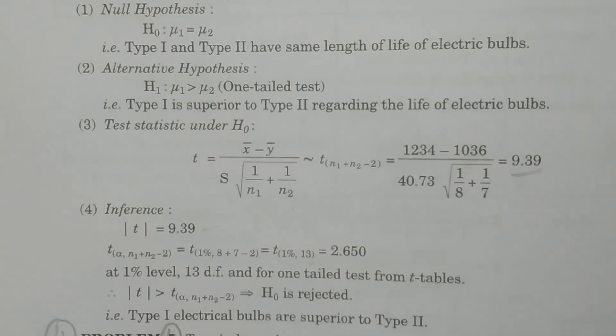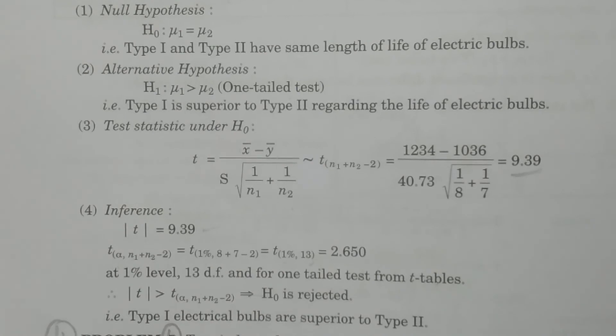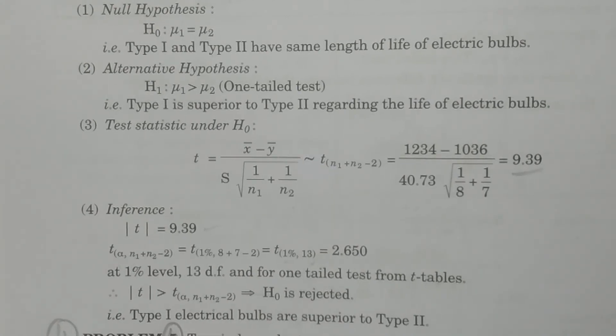Hope you understand. This is our conclusion. The alternative hypothesis is going to be accepted, that is μ1 is greater than μ2. Type 1 is superior to Type 2. So this is our conclusion. Thank you.